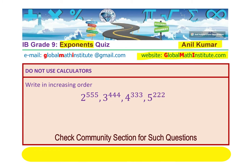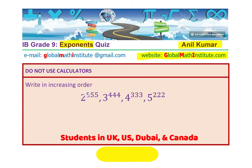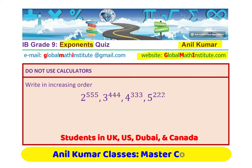The question here is to write the given numbers in increasing order. Do not use calculator. 2 to the power of 555, 3 to the power of 444, 4 to the power of 333, 5 to the power of 222.